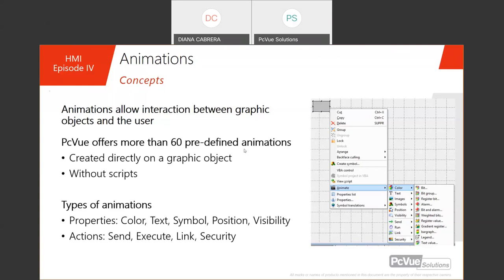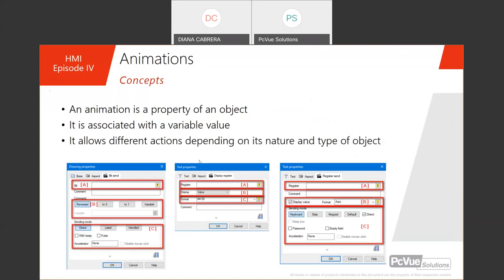It's important to note that an animation is really a property of an object. When you create an animation, as you can see in the screenshot, you have the properties of your object and the animations added to the properties — here we have a bit send, a display register, register send. You can add as many animations as you need for one object.